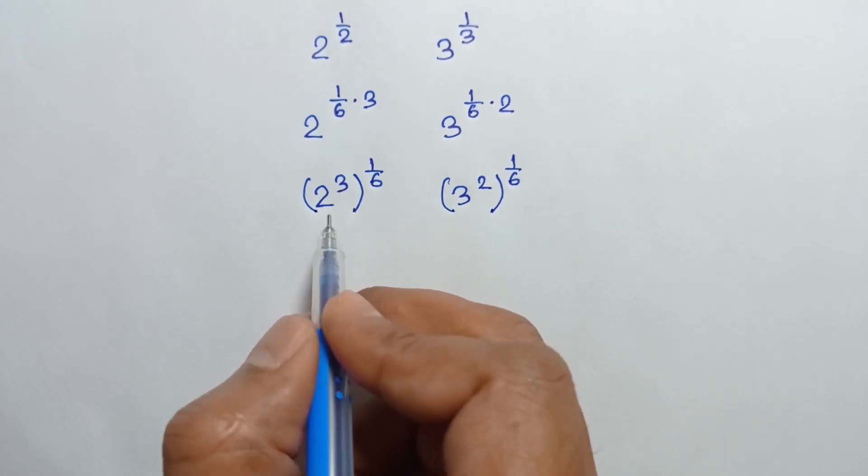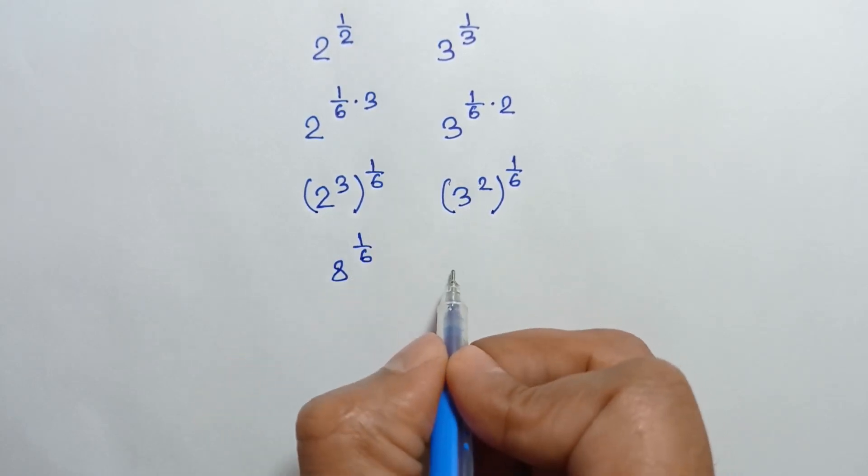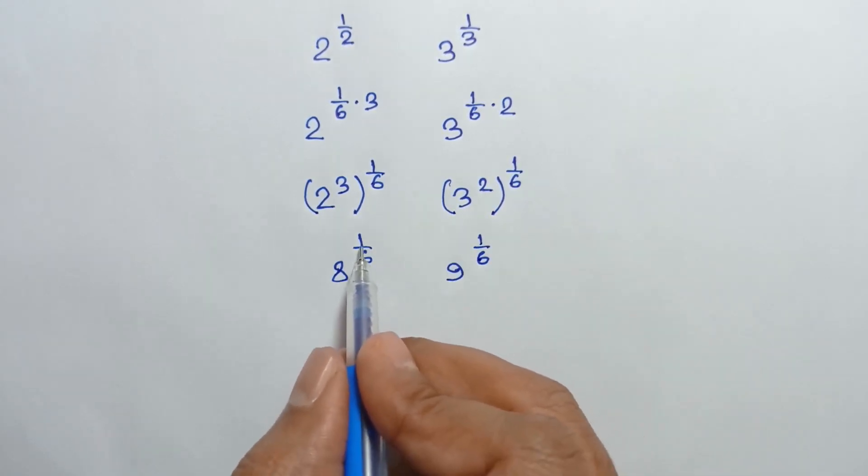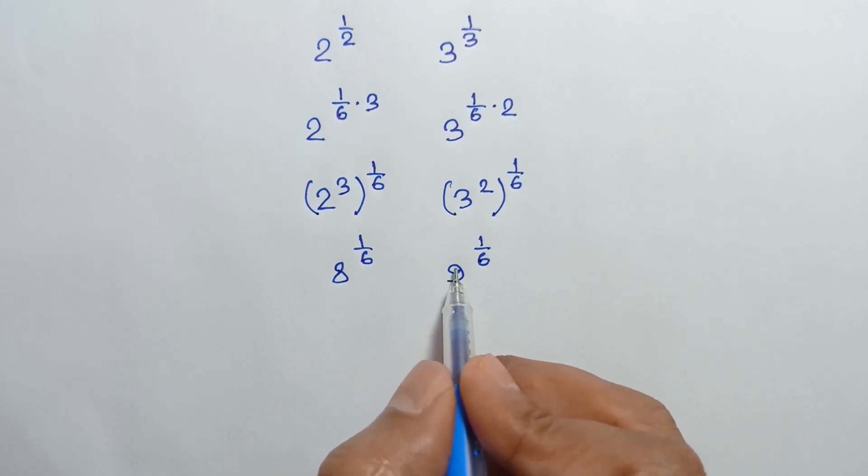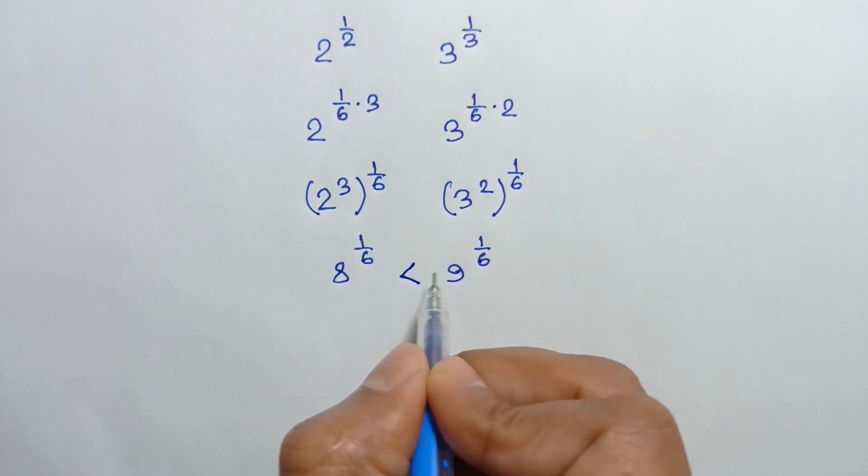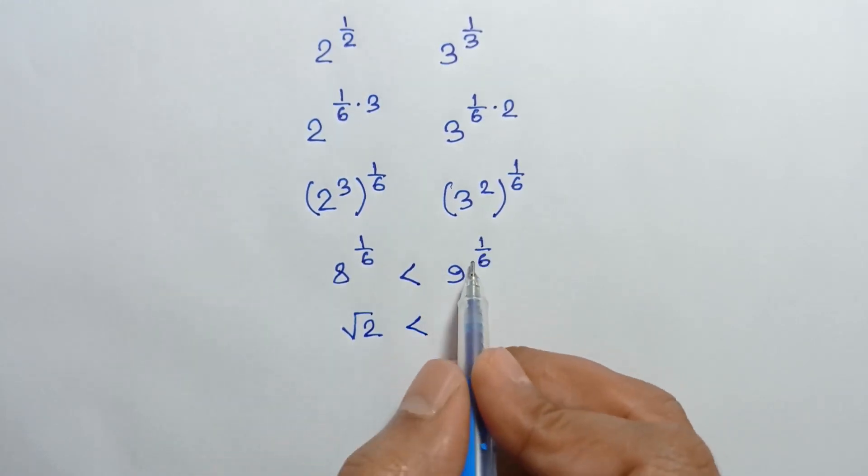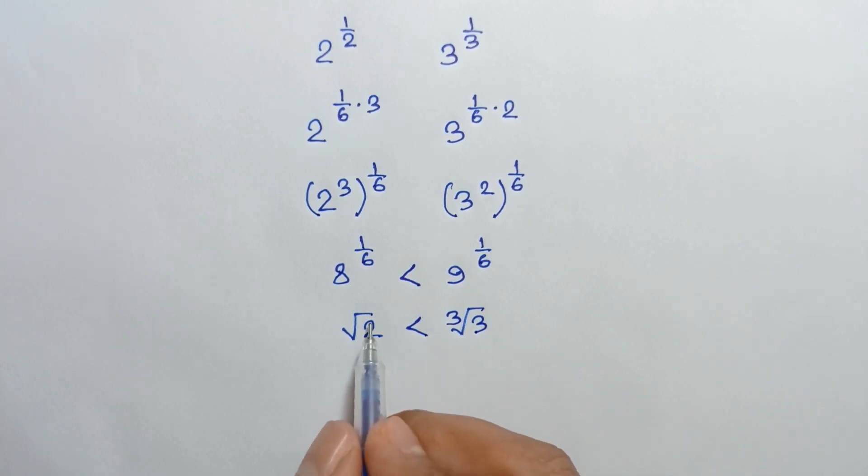Now 2 to the power 3 is 8 to the power 1 over 6, and 3 square is 9 to the power 1 over 6. Now both terms' powers are equal, 1 over 6, and 8 is less than 9, so this term is less than this term. So this is equivalent to square root of 2, so square root of 2 is less than cube root of 3. So cube root of 3 is larger than square root of 2.